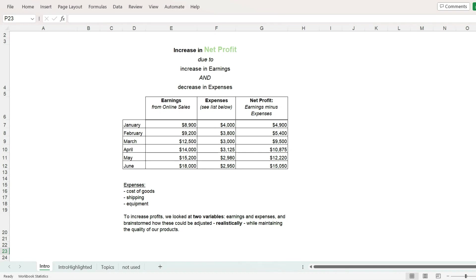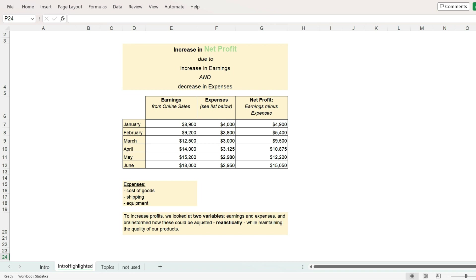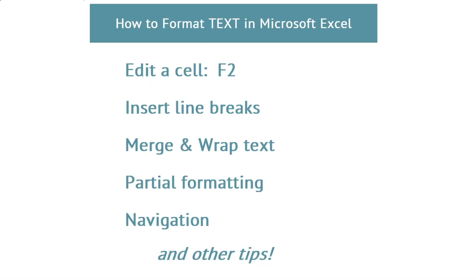In this video about Microsoft Excel, we will look at tips for formatting text in titles, column headers, and paragraphs. We will cover keyboard shortcuts such as using F2 to edit a cell, how to insert a line break inside a cell, merging and wrapping text, formatting different parts of text within the same cell, and how to navigate in a cell that contains a lot of text.